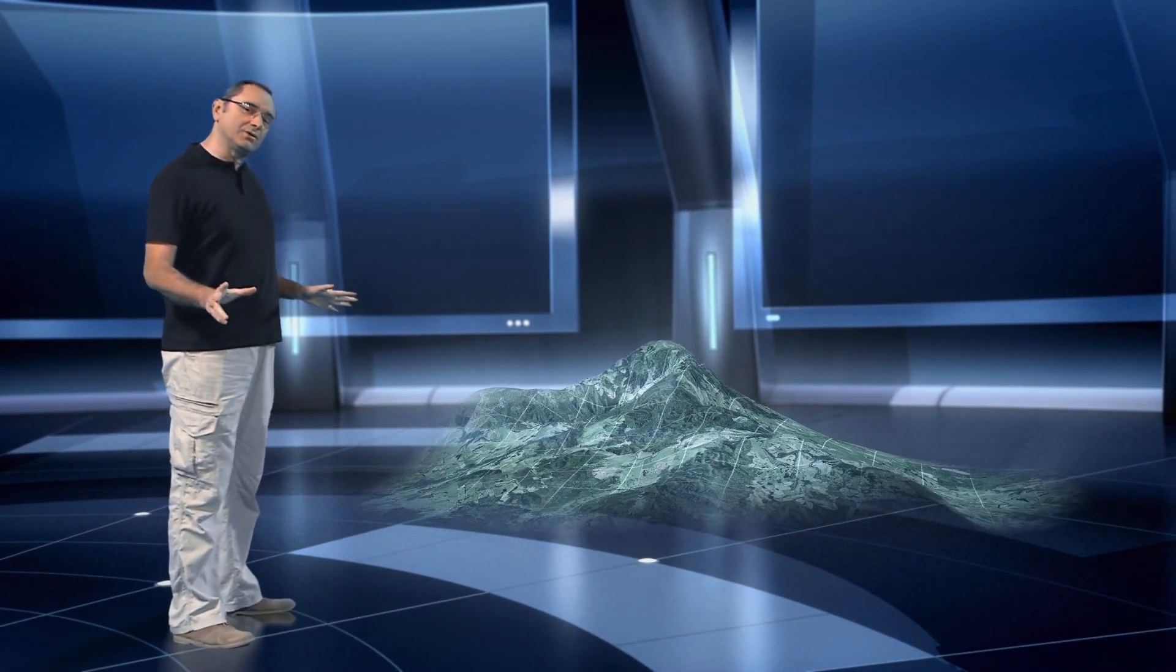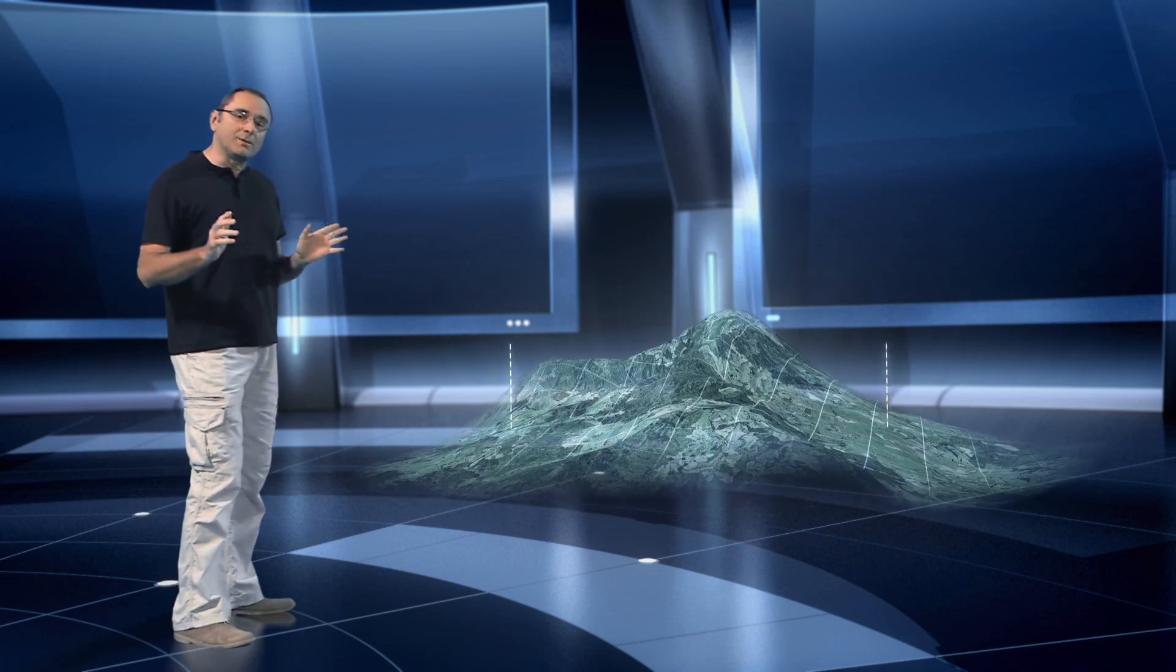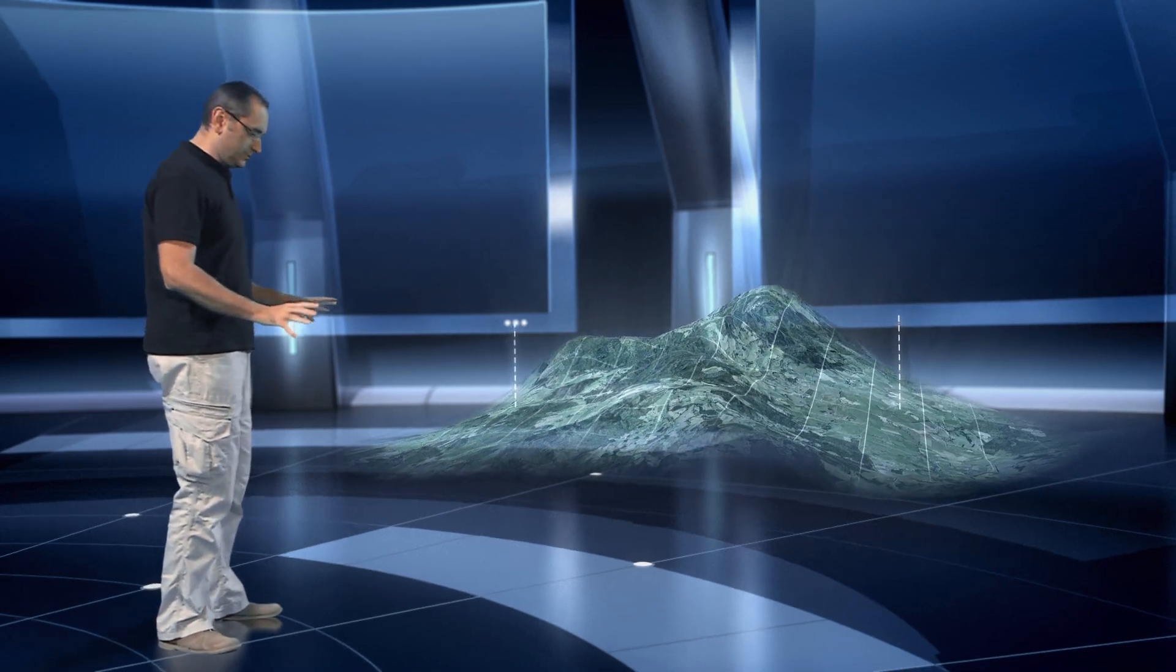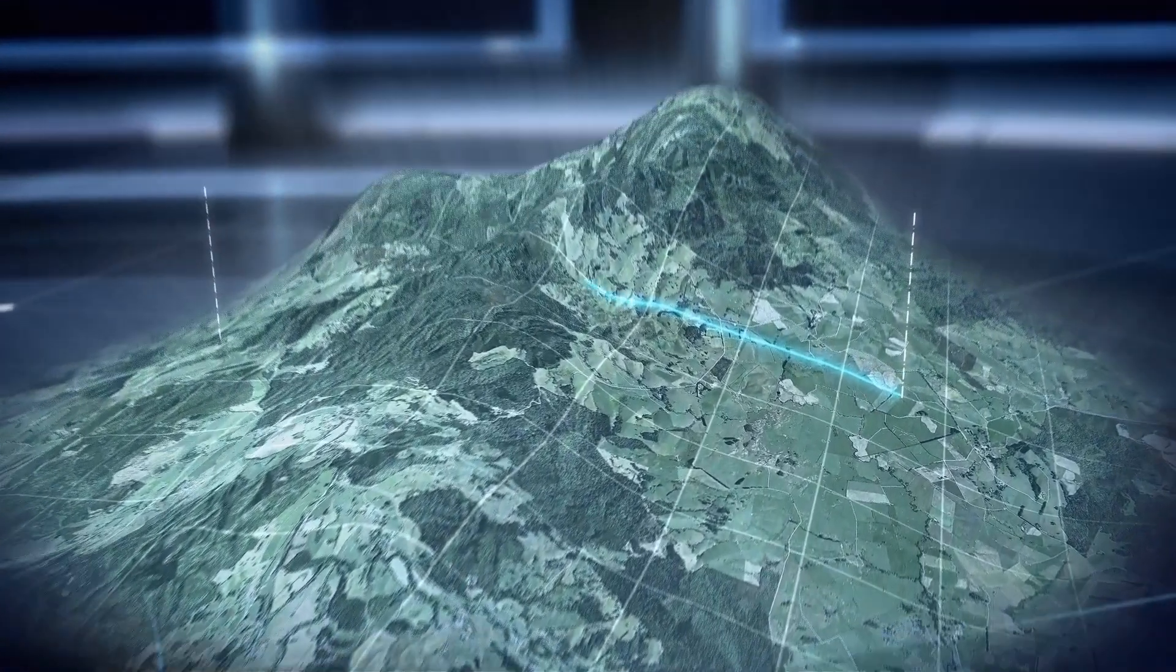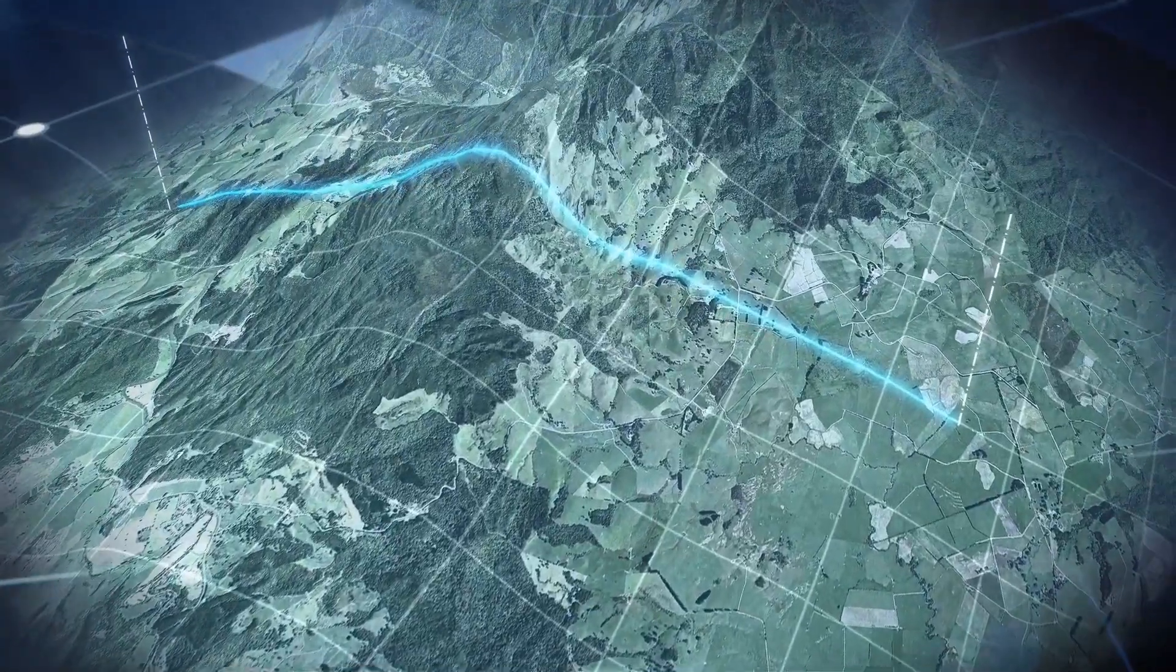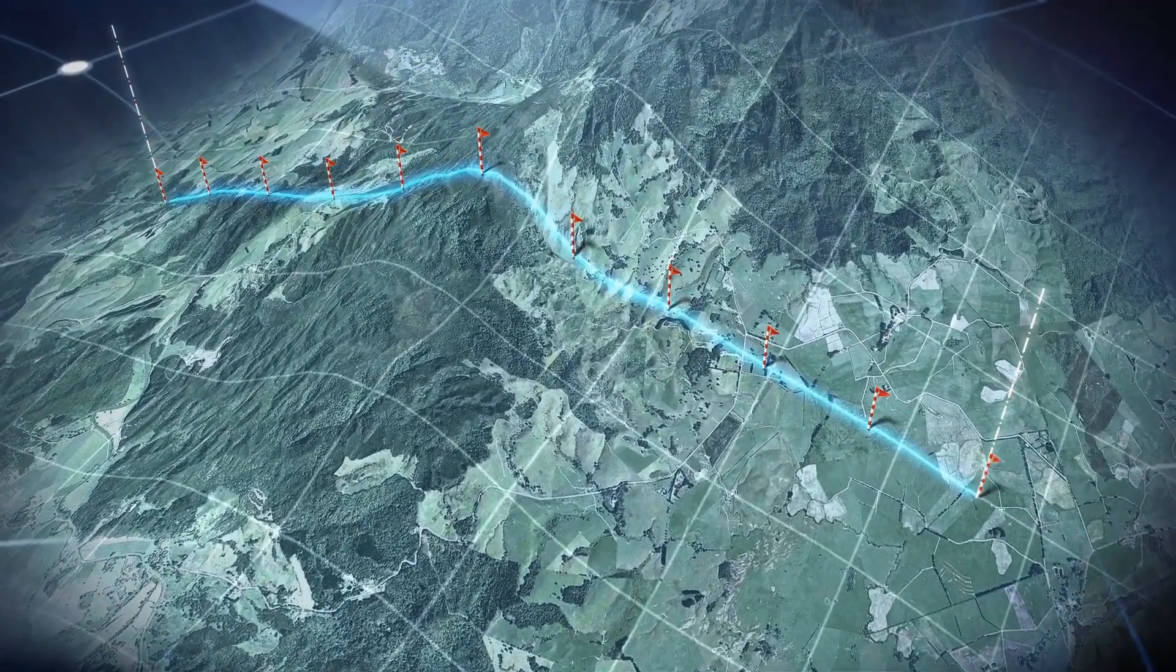To build the tunnels on the Nîmes aqueduct, the Roman engineers first marked out the stretches, then they redefined them, and finally they sunk vertical inspection shafts at regular distances.